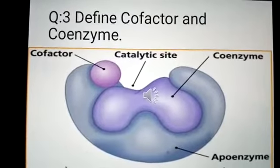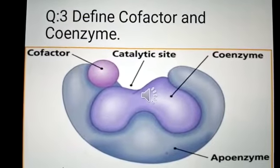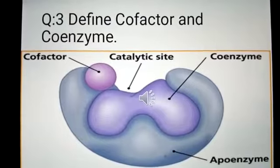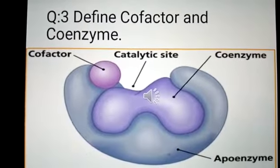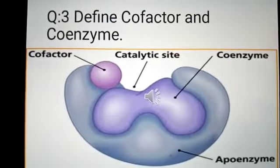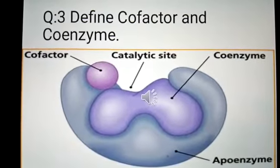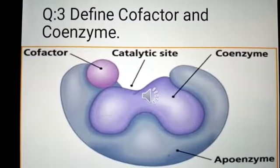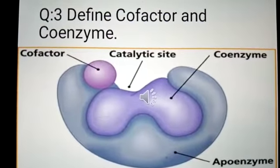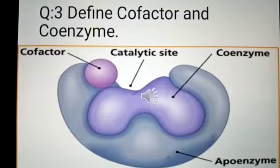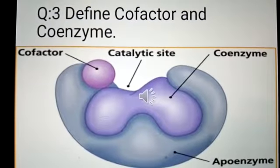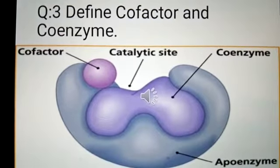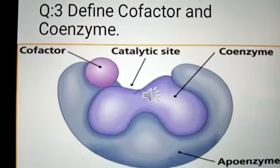The next question, question number three, is: define cofactor and coenzyme. As you know, a cofactor is a non-protein part of an enzyme. And a coenzyme is a type of cofactor which is loosely attached with the enzyme and detaches when the reaction is completed.